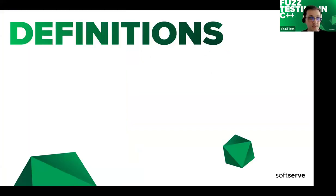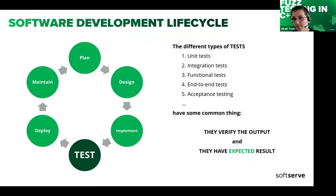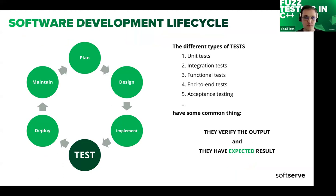Let's get started with some definitions. The software development life cycle comprises several stages like planning, designing, implementing and testing — the stage we will be discussing — followed by deployment, maintenance, and then it cycles back to the next iteration and so on.